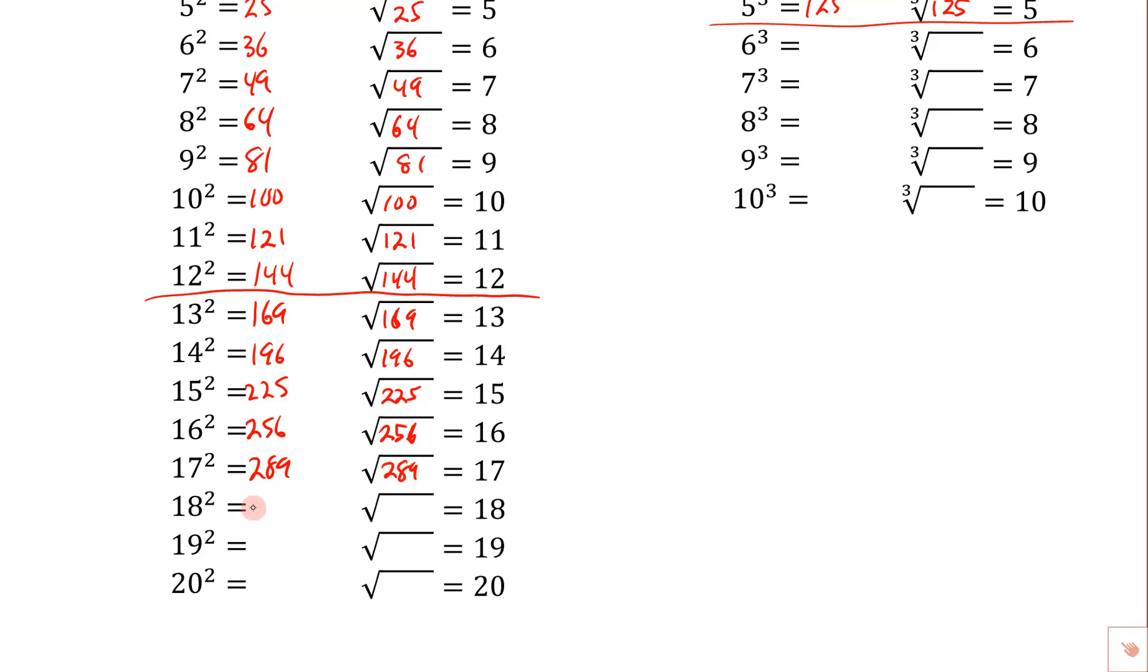Now we're at 324, so 18 squared is 324, so the square root of 324 would be 18. 19 squared is 361, so the square root of 361 would be 19. 20 squared is 400, so the square root of 400 would be 20.